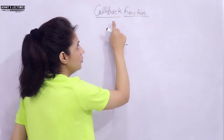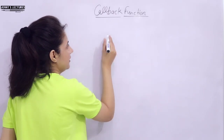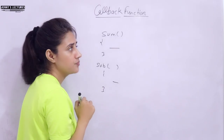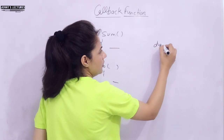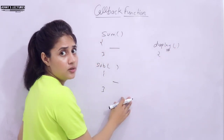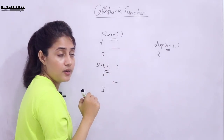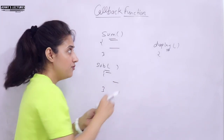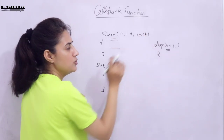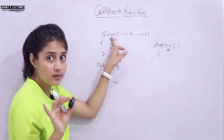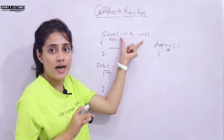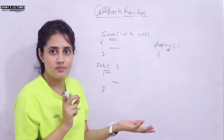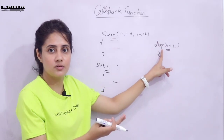Function pointers are used to call back a function. Let's take a simple example. Suppose we have two functions: one is sum — doing sum of two numbers — and one is subtraction — doing subtraction of two numbers. From another function called display, I want to call sum and subtract. Callback function means we are passing a function to a function. We can pass a function as an argument — that is, passing the address of another function to a function. That is what a callback function is.